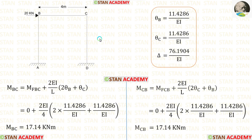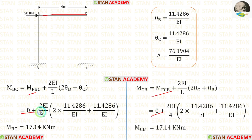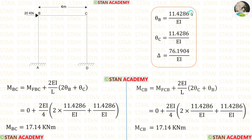Now let us make the slope deflection equations for beam BC. Applying the fixed end moments (zero) and length of BC = 4, and substituting the values of θB and θC, we obtain MBC and MCB.